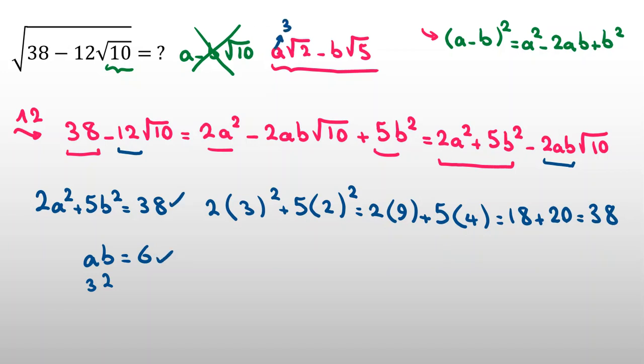Now, because a is 3, b is 2, so the answer is 3 root 2 minus 2 root 5. It is our answer.